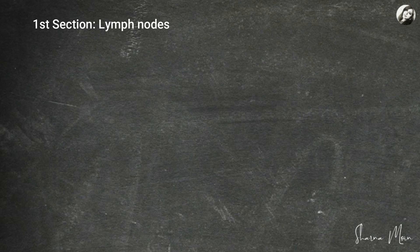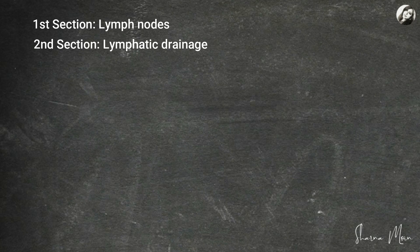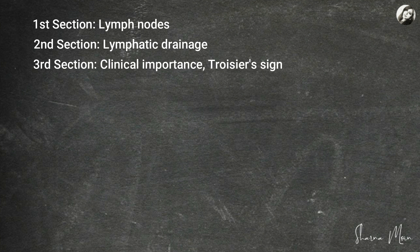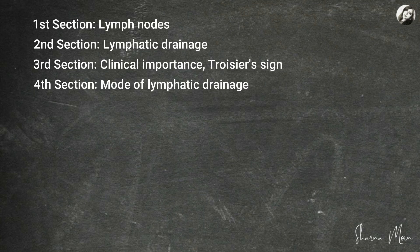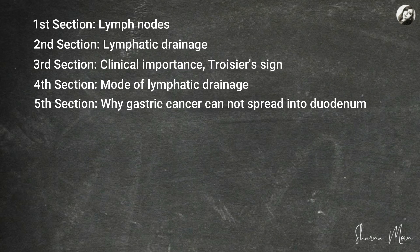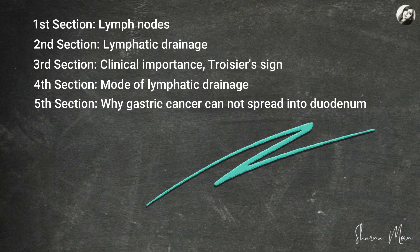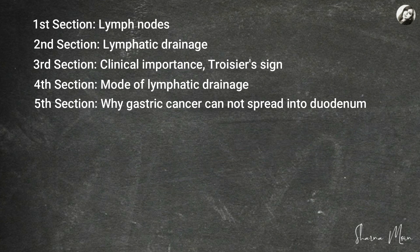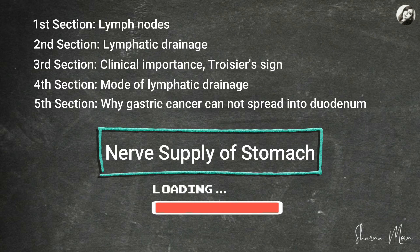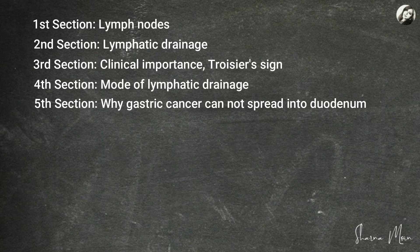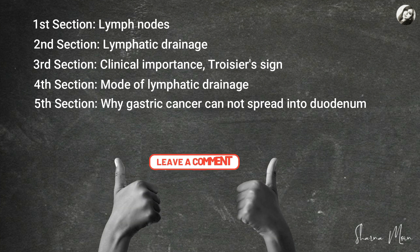To summarize: in the first section we showed the lymph nodes and their locations and names; the second section covered the lymphatic drainage; the third section described the clinical importance including Troisier's sign; the fourth section described the mode of lymphatic drainage in detail; and the fifth section explained why gastric carcinoma spreads into the esophagus but not into the duodenum. My next video will be on the nerve supply of the stomach. If you found this video helpful, please like, comment, share, and subscribe.